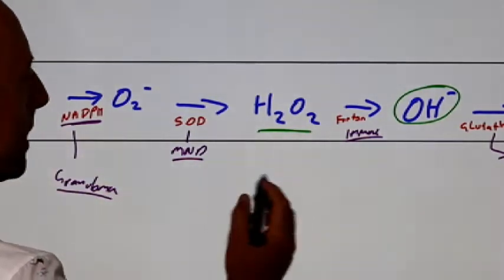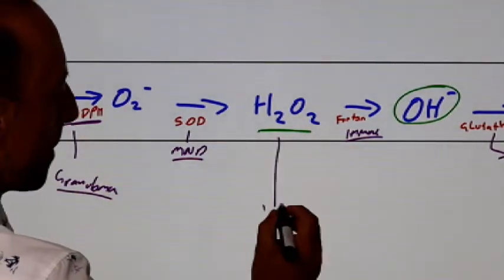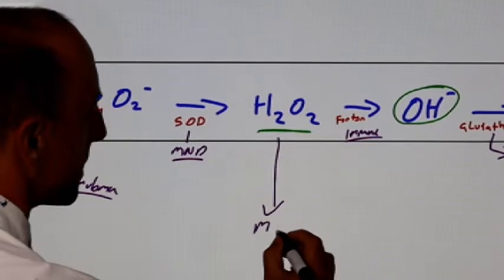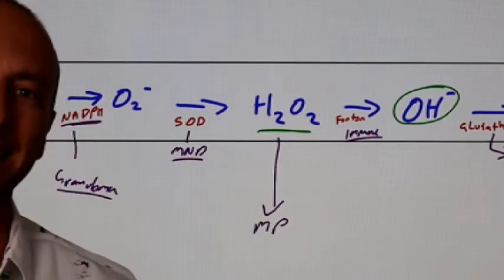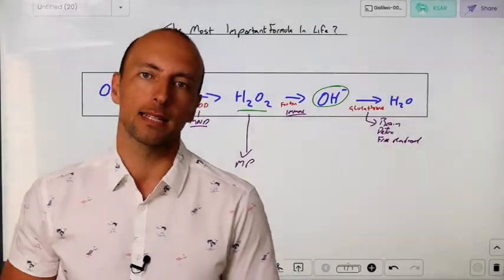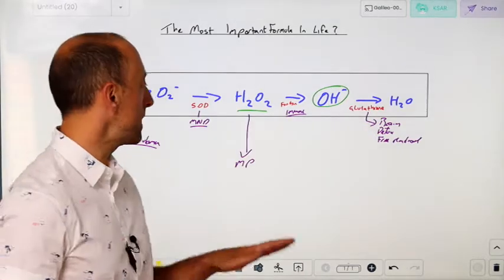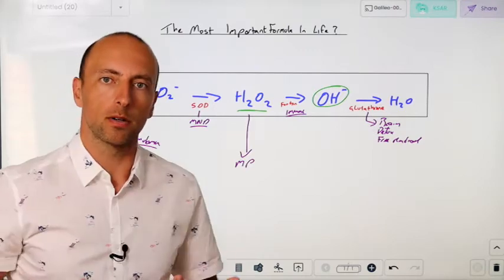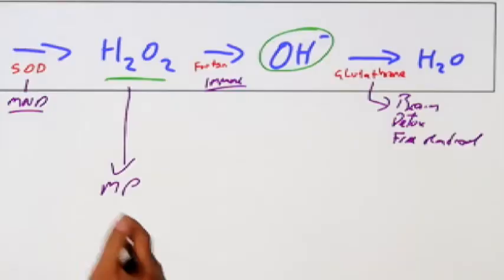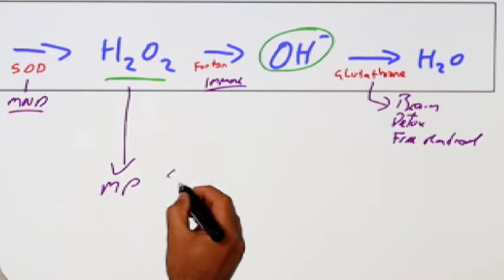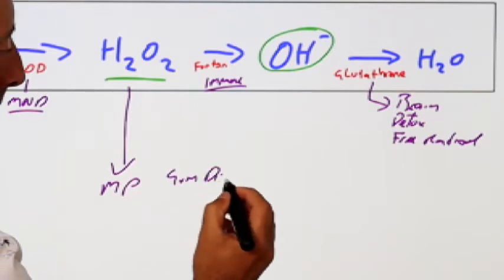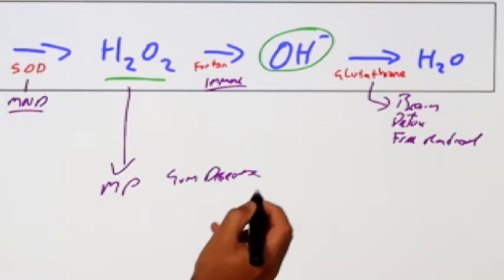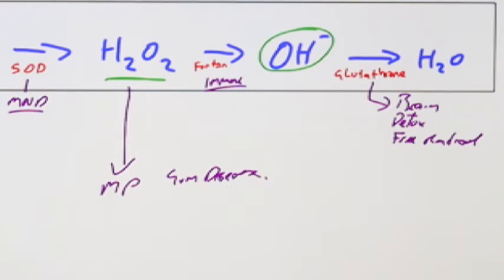If we keep looking through this area here, we also have another pathway that comes down here that produces a substance called myeloperoxidase. When myeloperoxidase starts going haywire, or when oral myeloperoxidase is elevated, it's been associated with gum disease.